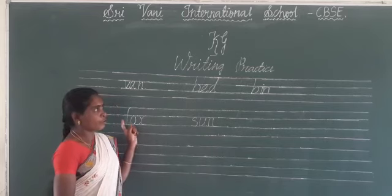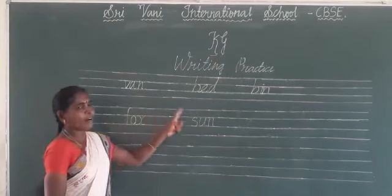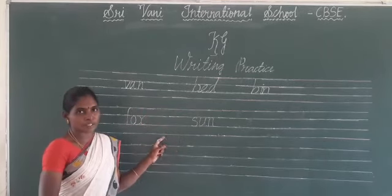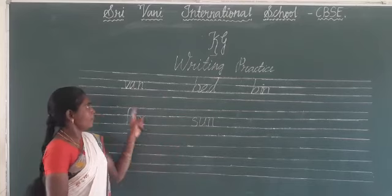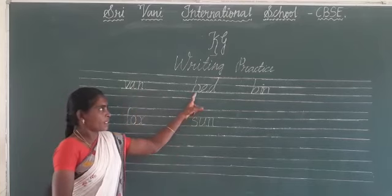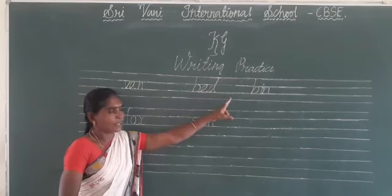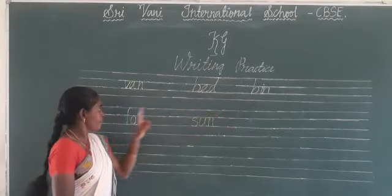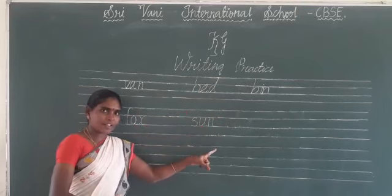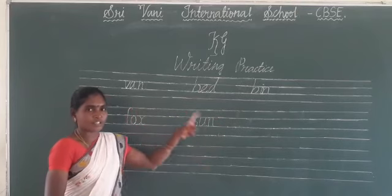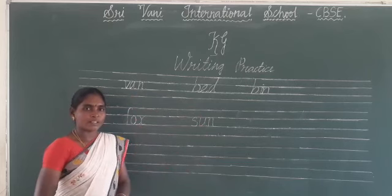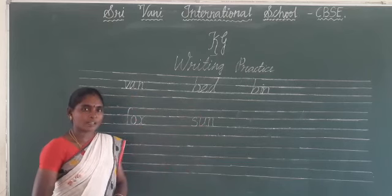Is it clear for you? So we have written five short vowel sound-producing words: B-A-N — van, B-E-D — bed, B-I-N — bin, F-O-X — fox, S-U-N — sun. Just practice all these five words along with their spellings and sounds. Thank you. We will meet in the next class.